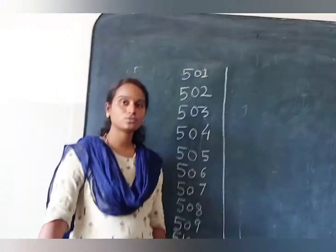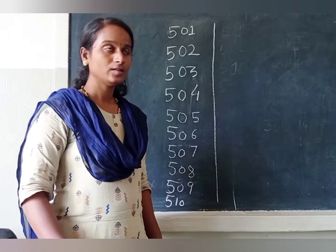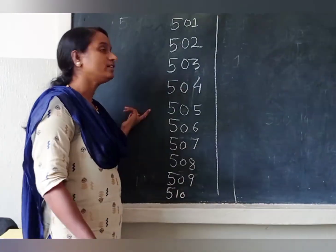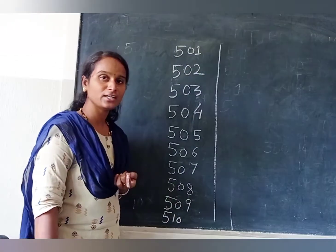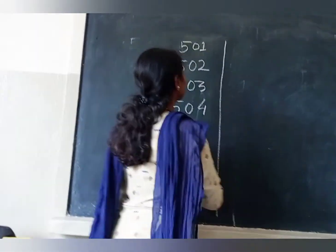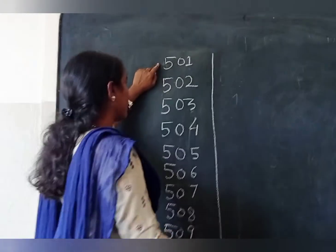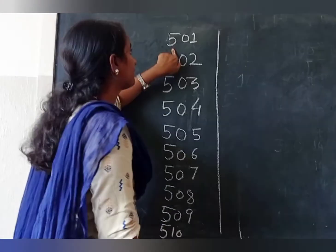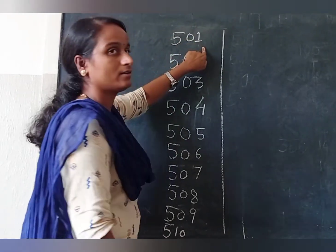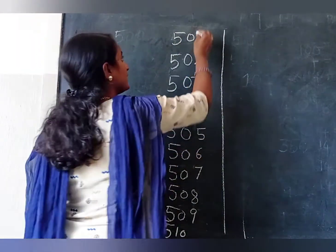Now we got to know how to write the numbers. But we don't know how to read. How to read children? For this 5, we read as 500 and 1, because of place values.